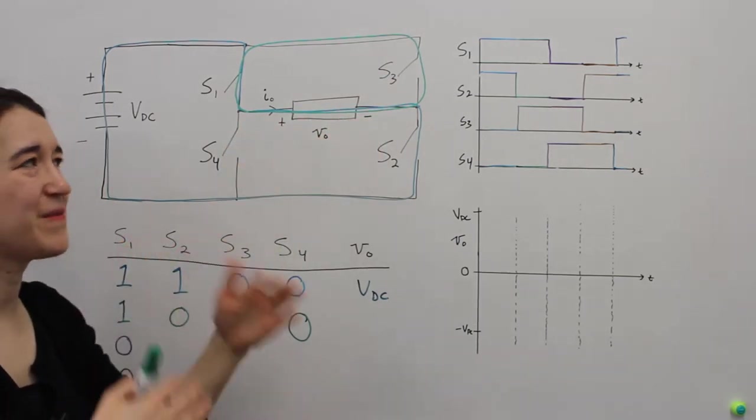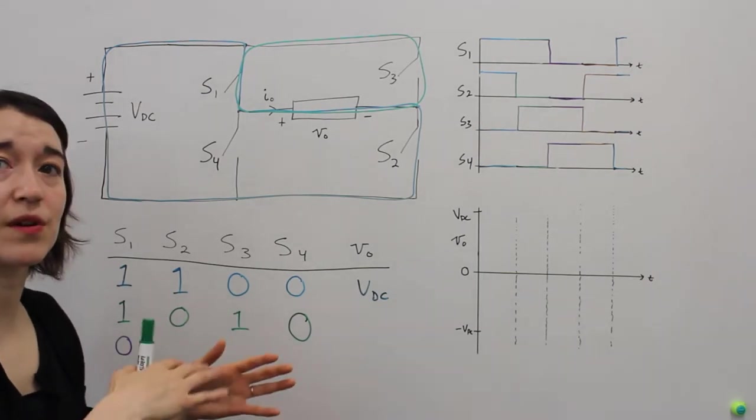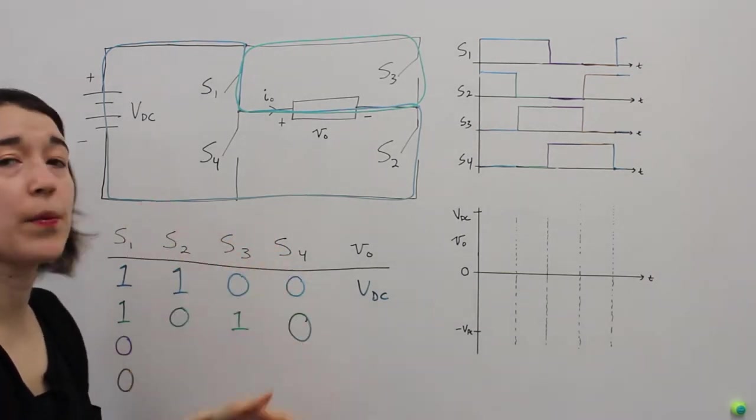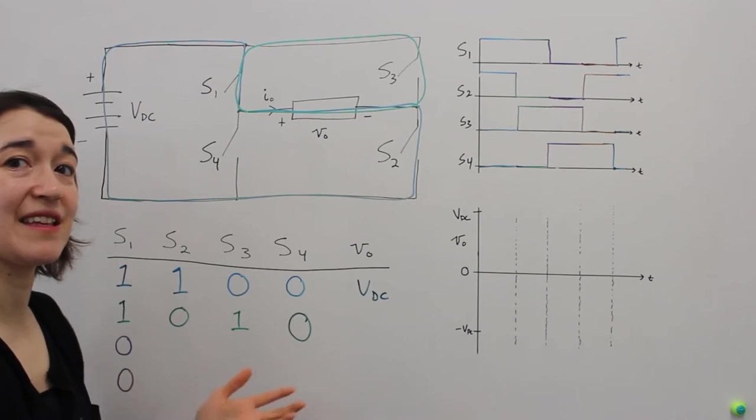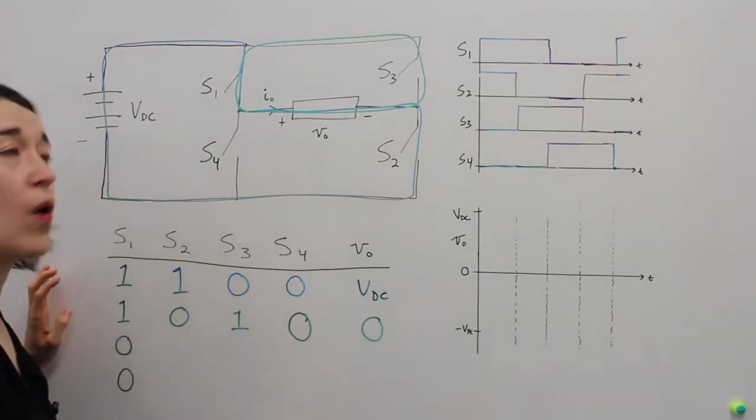You may be curious why we're going to do this. It's actually advantageous for us in terms of making the output more accurate as an AC waveform. So go with it. This is going to be 0 volts over our load.